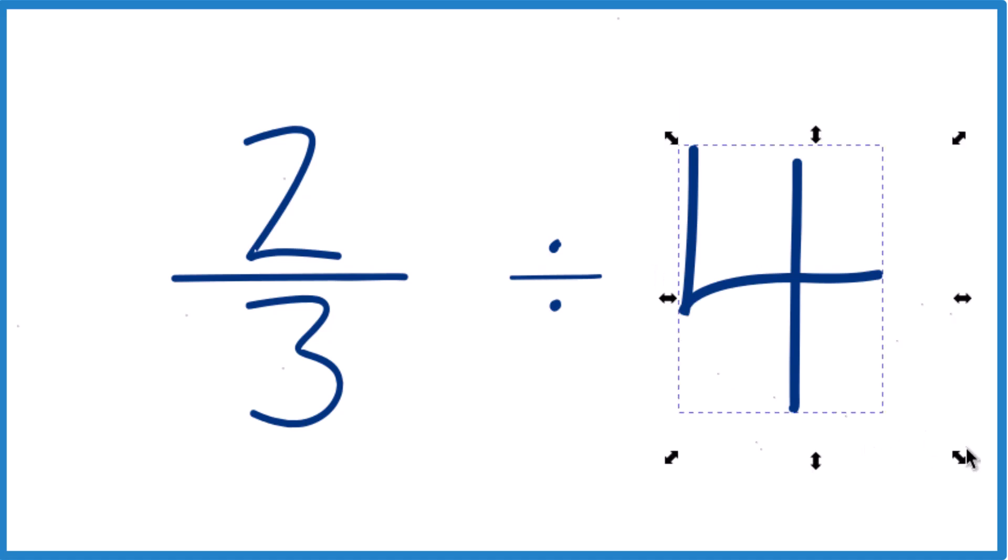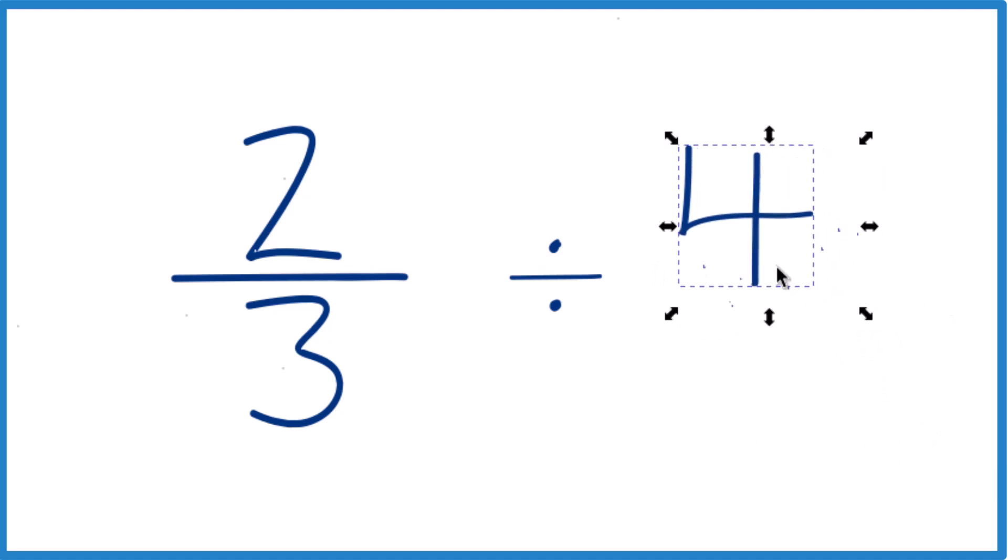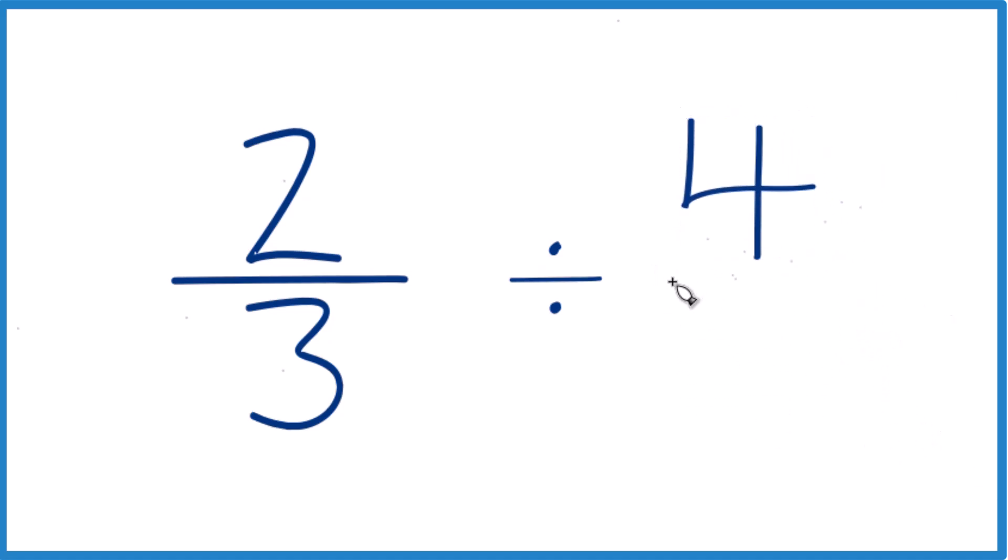Then we'll take the four here, and let's not call it four, but let's call it four over one. Because four divided by one, that's still four.